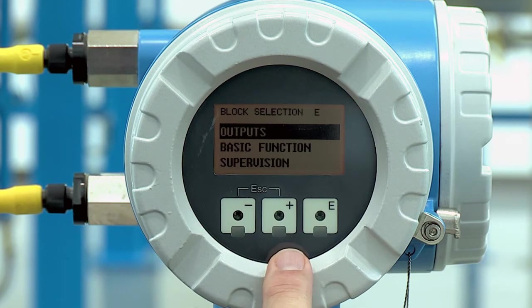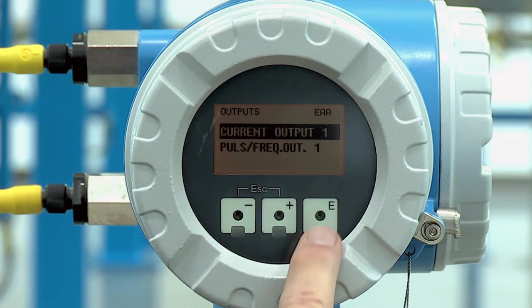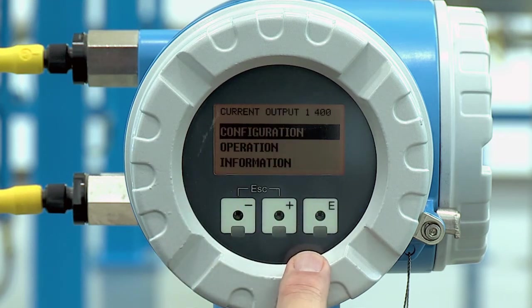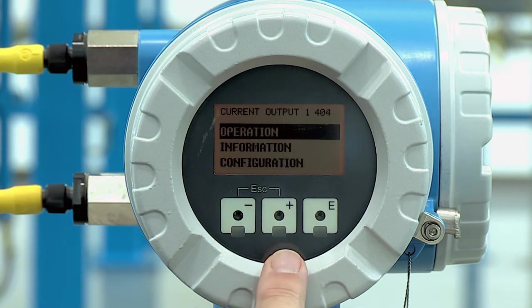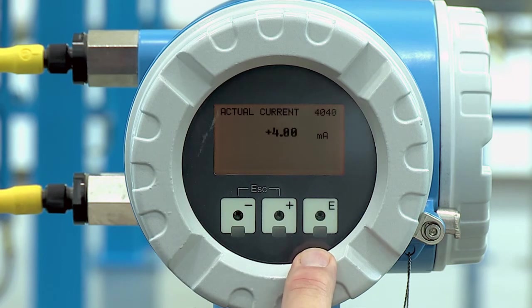Go down to the outputs, hit the enter button. We want to enter the current output so we hit enter. In this case we're going to go to operation, so plus down to operation, hit enter.